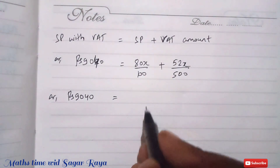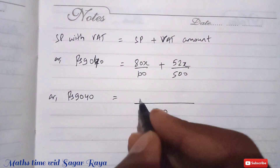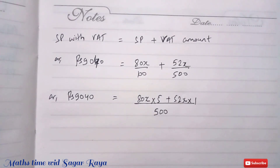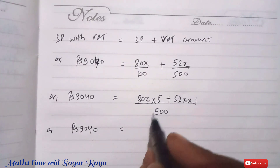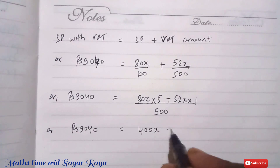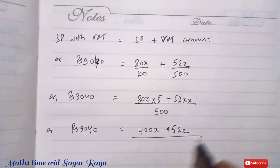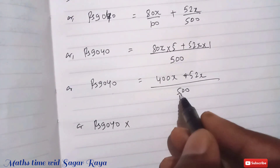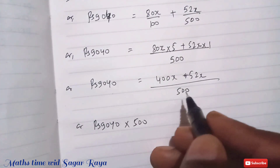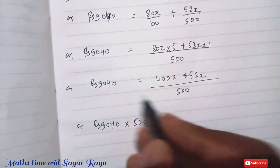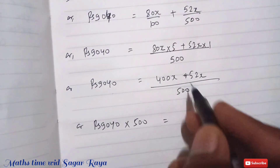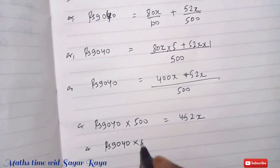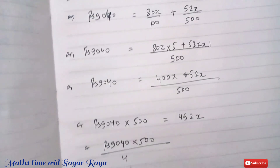Taking LCM of 100 and 500, which is 500: 80X times 5 over 500 plus 52X over 500 equals 9,040, giving us 400X plus 52X over 500 equals 9,040, which means 452X over 500 equals 9,040. Multiplying both sides by 500 gives 9,040 times 500 equals 452X.